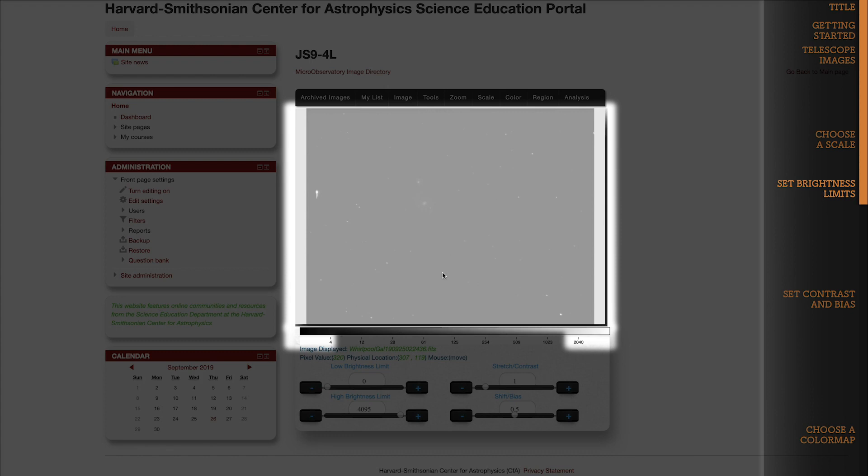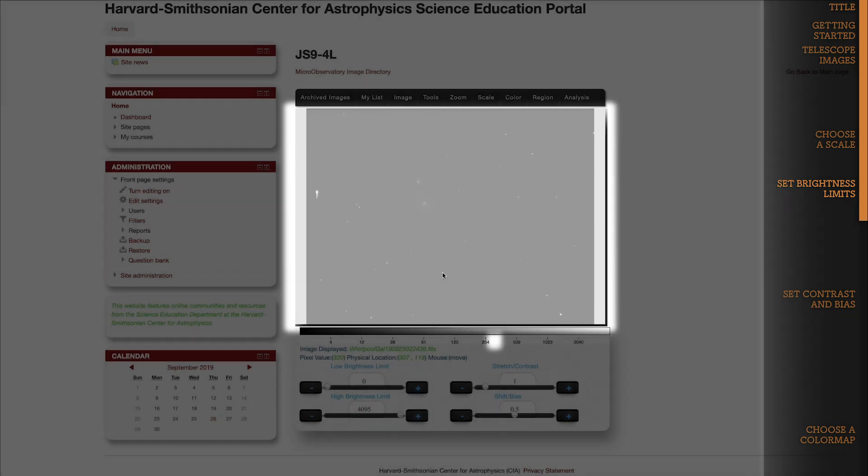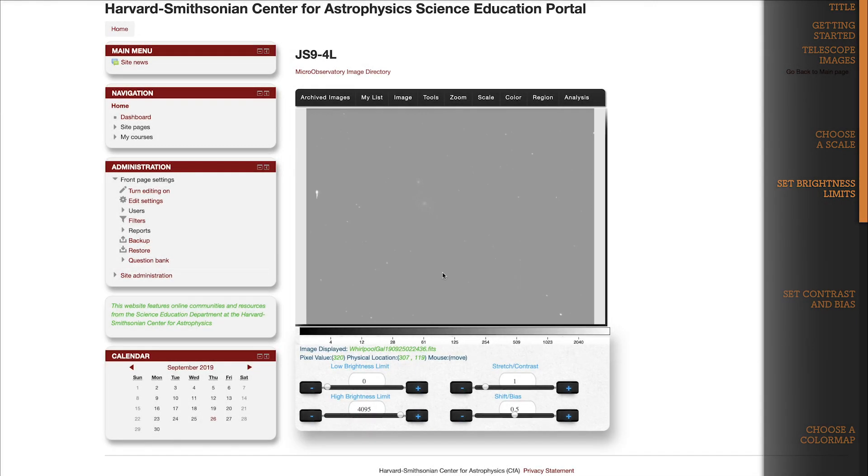These values at the edge of our color scale are determined by the low brightness limit and the high brightness limit, which you can see are set to zero and 4095. As a result of this range, the background sky pixel values of 315 or 320 all fall right around here on the scale and get assigned a medium gray color. My goal is to increase the contrast between the background sky and the dimmest features of my target object.